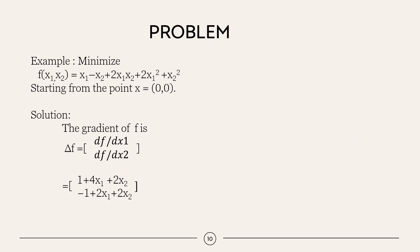So, here is a solved example. Here, in this example, we have to minimize the given function. The arbitrary point and the initial guess is from 0 comma 0. The given function is x1 minus x2 plus 2x1x2 plus 2x1 square plus x2 square.